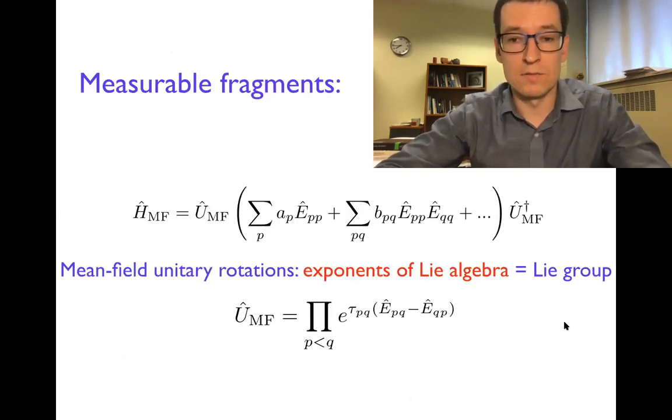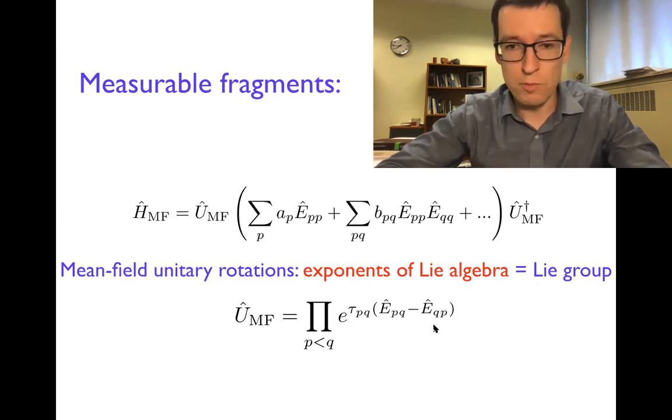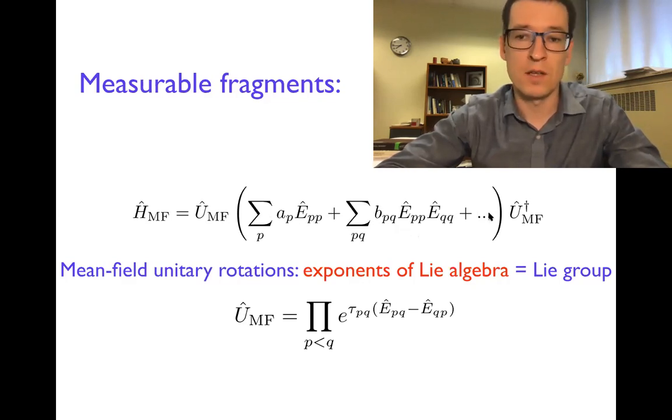Now, what are the measurable fragments that we can use in our developments? They can be written in the following form. We call them mean field Hamiltonians because for these type of operators, actually, mean field theories like Hartree-Fock would provide the exact answer, and that's the etymology of the name. The structure of these operators is the following. We have essentially orbital rotations, Hartree-Fock rotations, or mean-field unitary rotations that are obtained by exponentiating the algebra, and those unitaries on both sides sandwich the Cartan sub-algebra functions. Because we have only occupation number operators here with some constants a, b, and then we can go for higher powers, but for the electronic Hamiltonian, we don't need to go beyond the second power.